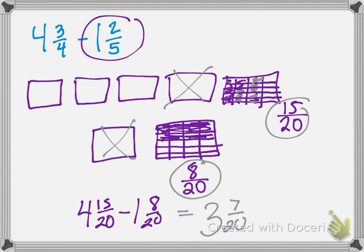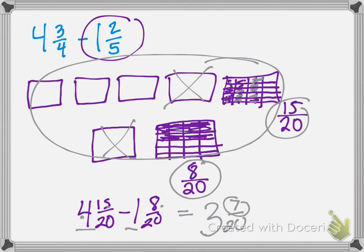We can see it with our drawing — we've proved it. We can also check: 4 minus 1 is 3, 15 minus 8 is 7, and our denominator stays the same: 3 and 7 twentieths. So as a reminder: you draw both fractions and whole numbers, draw the opposite lines in each fraction square, then take away the second drawing from the first drawing. Whatever you have left in the first drawing is your difference. That is a quick tutorial on subtracting fractions with unlike denominators using the area model.